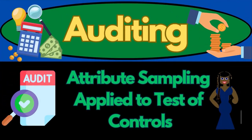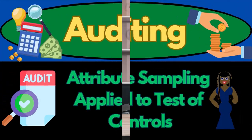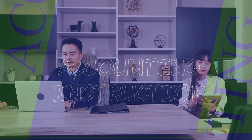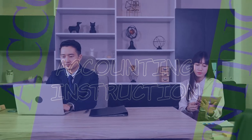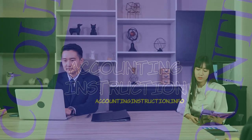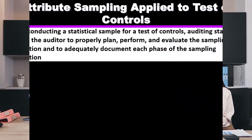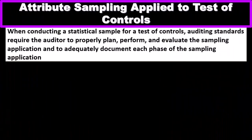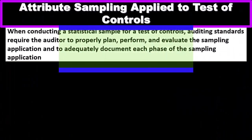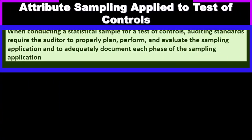In this presentation, we will take a look at attribute sampling applied to a test of controls. When conducting a statistical sample for a test of controls, auditing standards require the auditor to properly plan, perform, and evaluate sampling application.